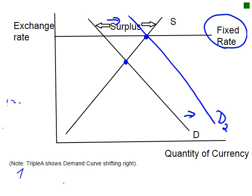Here we can see the fixed rate. Left to its own devices the currency would be below where the government ideally wants it. So the government takes foreign currency, goes to the foreign exchange market, and buys up their own currency — hence increasing demand for it. By increasing demand for their own currency, they move from a lower value up to the target fixed rate value, through intervention, not simply because the government decrees it.